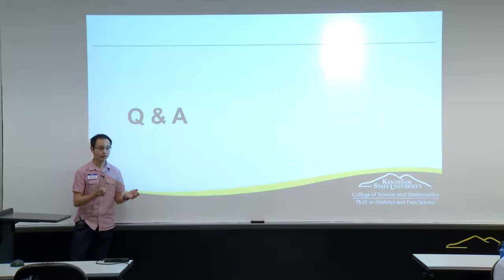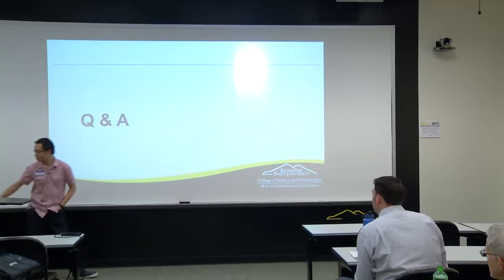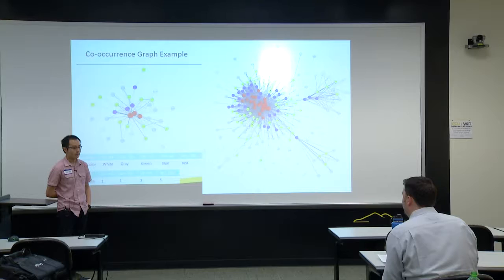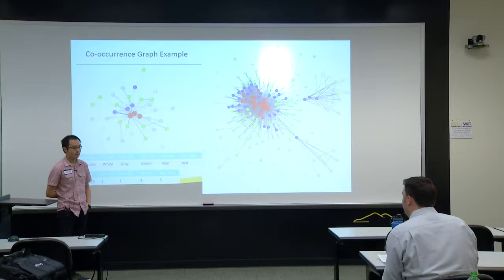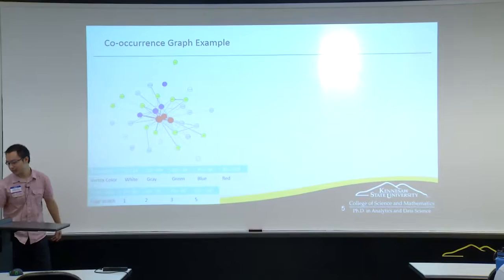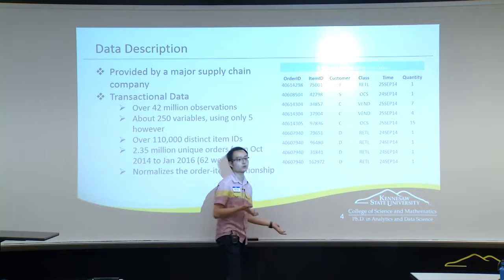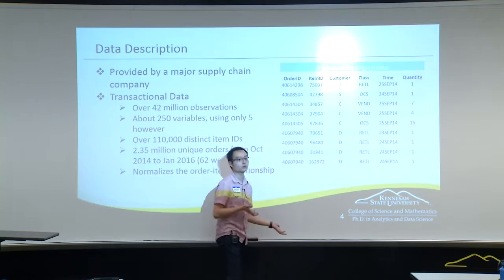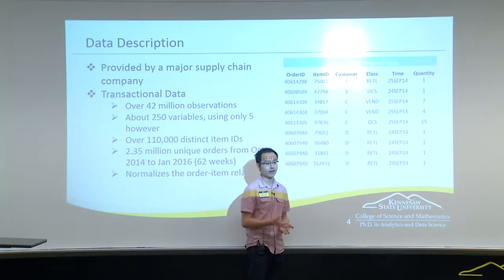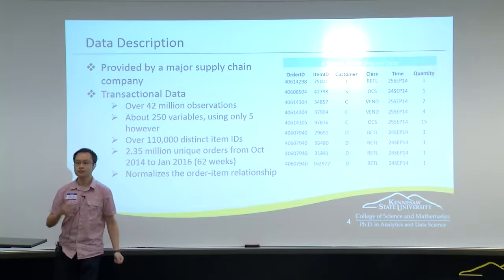Question: On the slide where you had all those graphs together, how do you make sense of that? Do you look at a specific client and move away all the other connections? It really depends on how you want to scale your analysis. The data has information about customers, their segment — like vendor or retailer — and time. You can choose one customer and use a graph for them, choose one customer segment like vendors only, or choose a specific time period like what items were bought together in January.